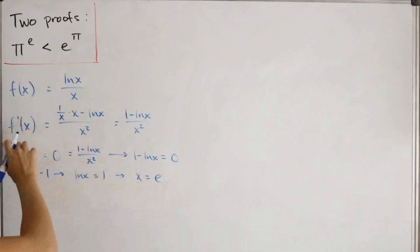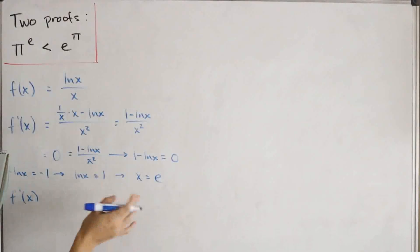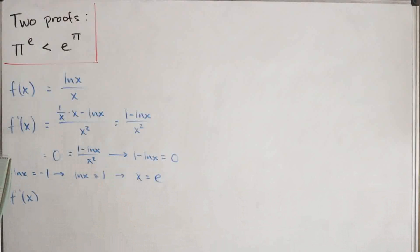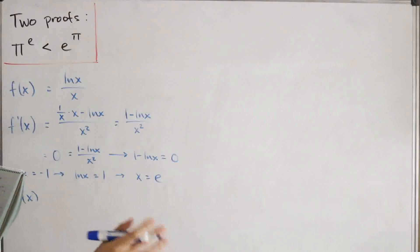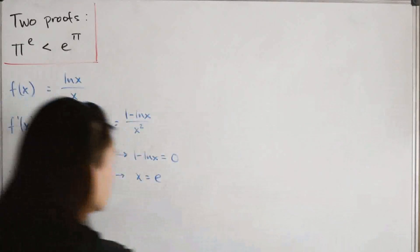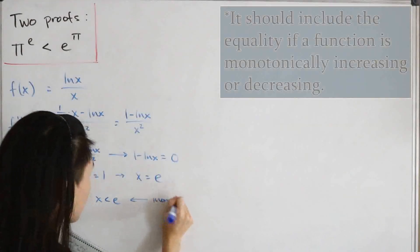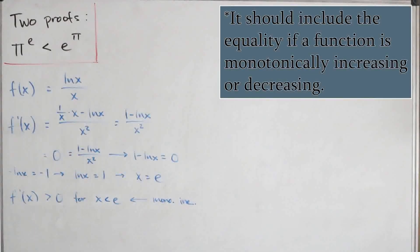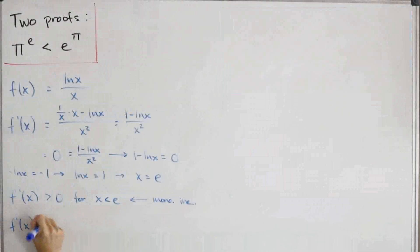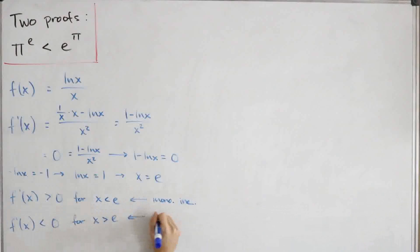Testing values around x = e: for x strictly less than e, f'(x) is strictly greater than zero, meaning f is monotonically increasing. For x strictly greater than e, f'(x) is less than zero, meaning f is monotonically decreasing.